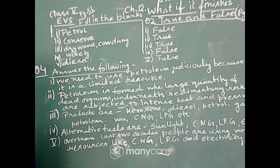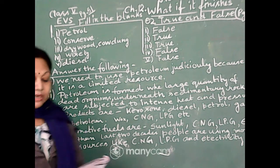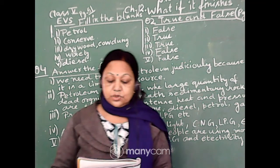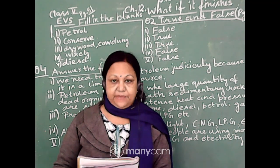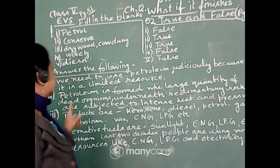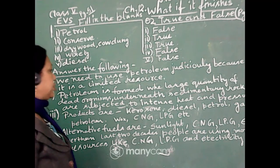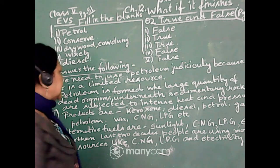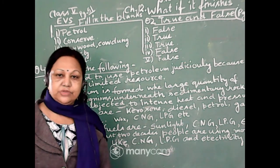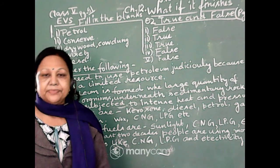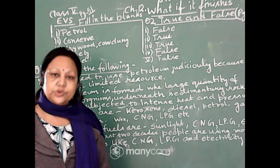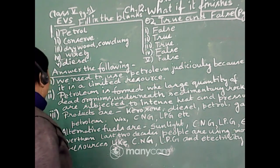And answer the following question. Question number one, we need to use petroleum judiciously. Why? So, the answer is, we need to use petroleum judiciously because it is a limited resource. We know after someday it will become finished. So, we have to use it very judiciously and very wisely.